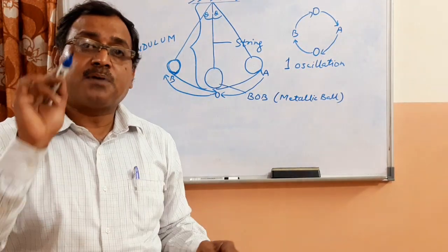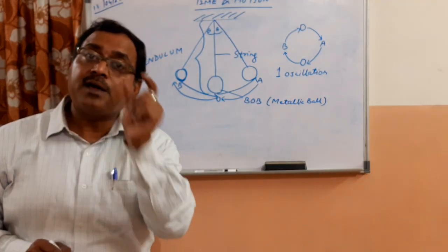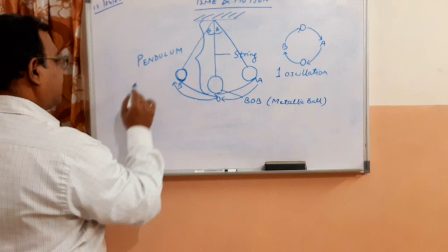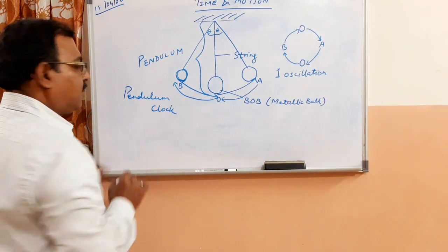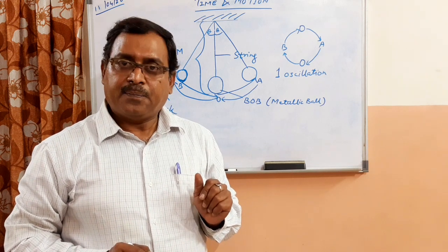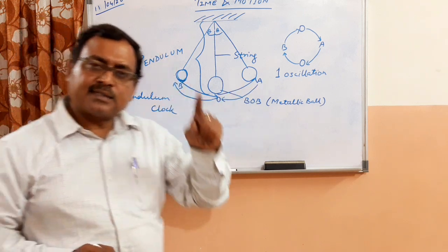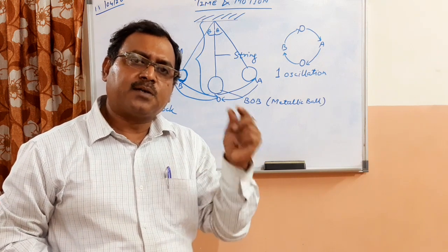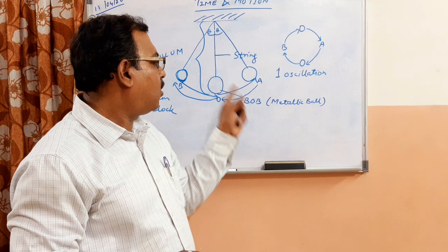So Galileo was the first person to observe that this oscillation of a pendulum gets repeated in a regular interval of time, and hence the first pendulum clock was made by Galileo. Because he observed that this oscillation of a pendulum gets repeated after the same interval of time, this helped him to make the first mechanical clock with the help of an oscillating pendulum.